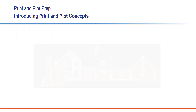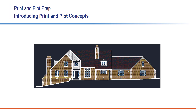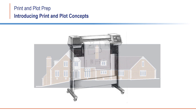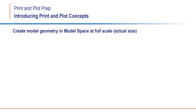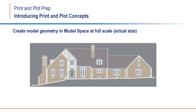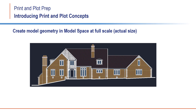When you begin to work on a new drawing, one of the biggest concerns is often how to get the drawing to print or plot at the proper scale. When you work in a drawing, you should always create the objects that represent the actual drawing geometry — the building, the mechanical part, or whatever it is that you are creating in model space. You should create that geometry at its actual size; therefore, when working in model space, one drawing unit should always equal one real-world unit.